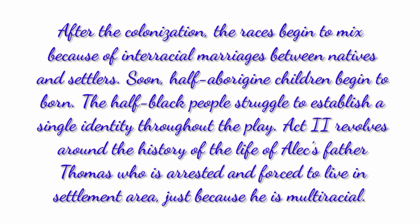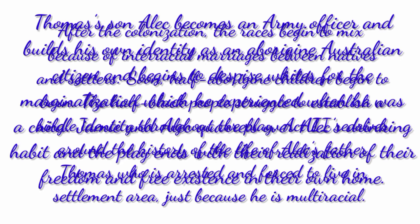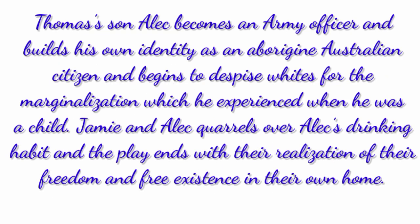Act 2 revolves around the history of the life of Alak's father, Thomas, who is arrested and forced to live in the settlement area just because he is multiracial. Thomas's son, Alak, becomes an army officer and builds his own identity as an aboriginal Australian citizen. Jamie, the son of Alak, quarrels with him over his drinking habit, and the play ends with their realization of their freedom and free existence in their own home.